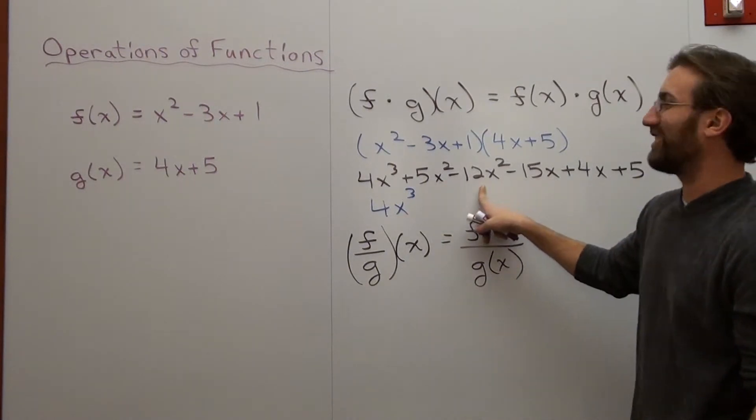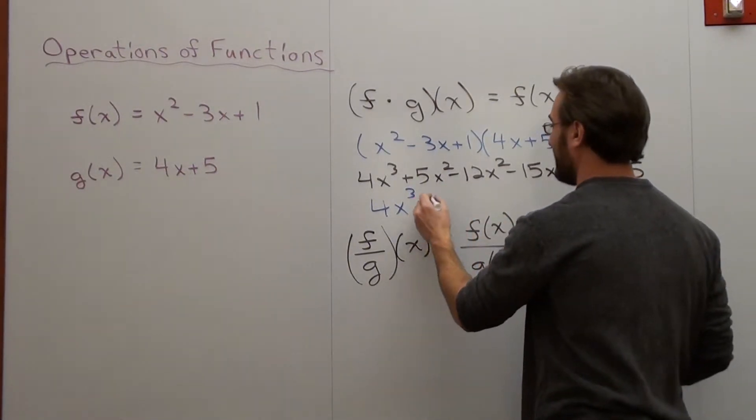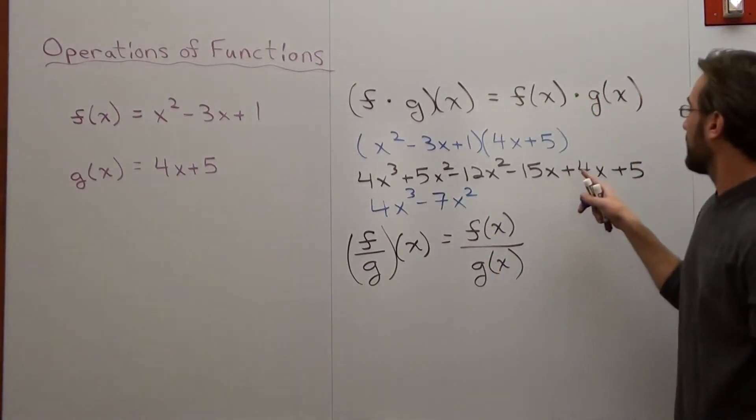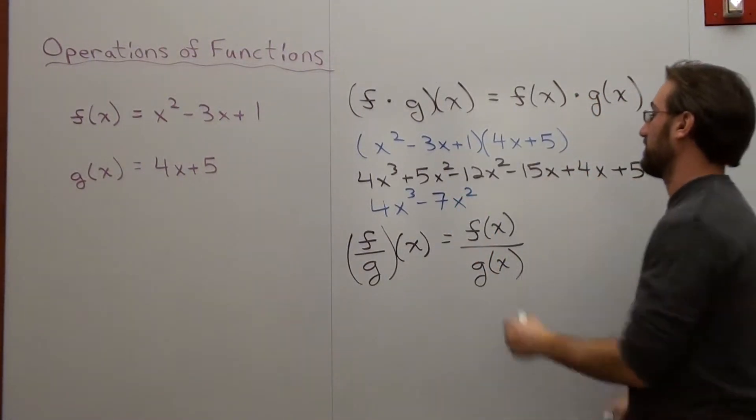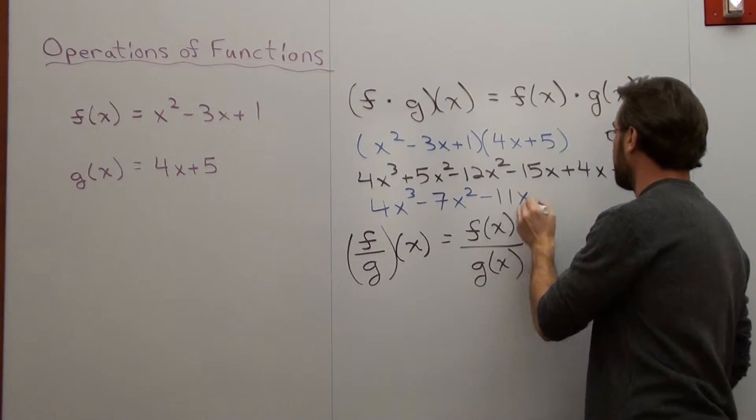5x squared minus 12x squared is negative 7x squared. Negative 15x plus 4x is negative 11x, plus 5.